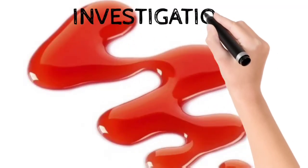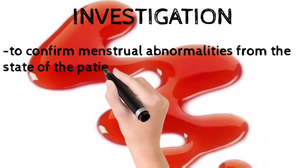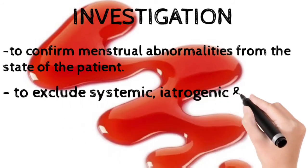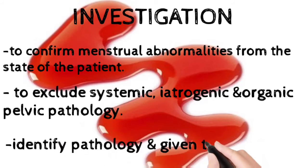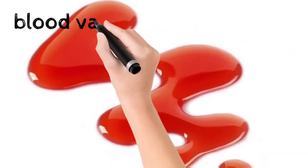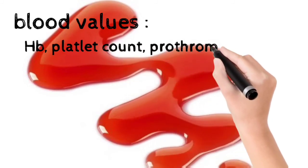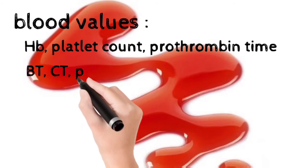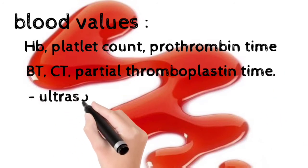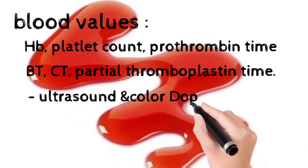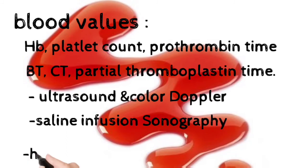Now we see the investigations. First, to confirm the menstrual abnormalities from the state of the patient; second, to exclude systemic, iatrogenic, and organic pelvic pathology; and third, to identify the pathology so that appropriate treatment can be given. Blood values to investigate include hemoglobin, platelet count, prothrombin time, bleeding time, clotting time, and partial thromboplastin time. Other investigations include ultrasound and color Doppler, saline infusion sonography, hysteroscopy, and laparoscopy.